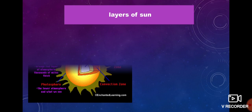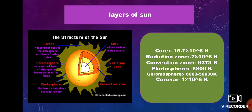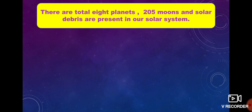Now the layers of the Sun. There are six layers. First is the core, where the nuclear fusion reaction takes place, with a temperature of 15.7 × 10^6 Kelvin. Second is the radiation zone, with temperature 2 × 10^6 Kelvin. Third is the convection zone, with temperature 6,273 Kelvin. Fourth is the photosphere, with temperature 5,800 Kelvin. Fifth is the chromosphere, with temperature 6,000 to 50,000 Kelvin. Last is the corona, with temperature 1 × 10^6 Kelvin.